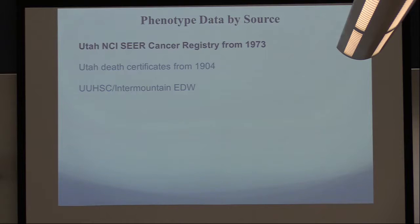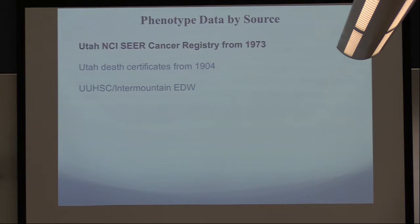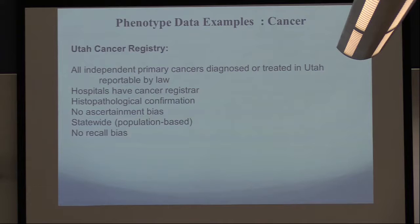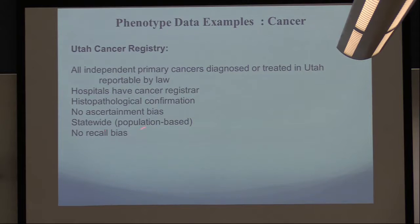Hospital EDW data you'd imagine should be the best, but it's frightening and extremely difficult. The cancer registry data — the NCI's Surveillance, Epidemiology, and End Results registry — is just top-notch. You can't get in there without 18 different people confirming you have cancer. In Utah, every cancer diagnosed or treated must go in the registry; every hospital and facility has a registrar who checks it, so all cases have histopathologic confirmation.